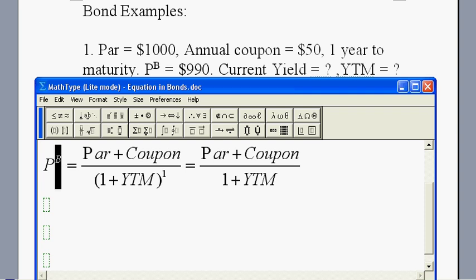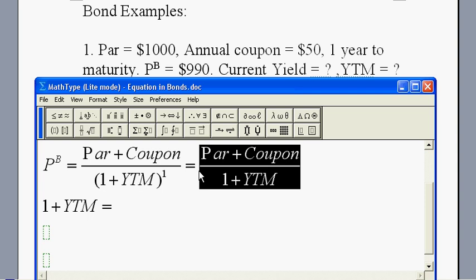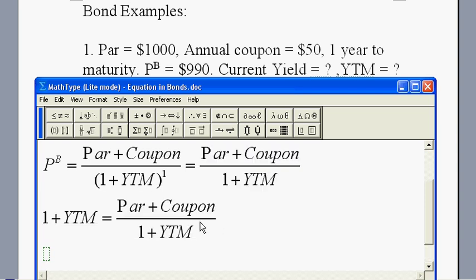If you divide the left hand side by the bond price, you have 1. Then multiply by 1 plus yield to maturity. Now you have 1 plus yield to maturity equals par plus coupon divided by the bond price, because I multiply by 1 plus yield to maturity on the right hand side as well and divide by the bond price.